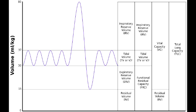Now after you do a maximum expiration, the amount of air you still have left over in your lung would be your residual volume. This is the air you are not able to breathe out, because this is the amount of air that will always be in the lungs — the air that remains after maximal expiration. And this residual volume cannot be measured on spirometry.